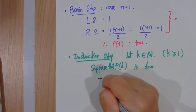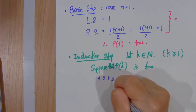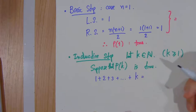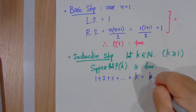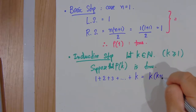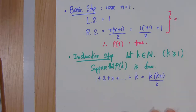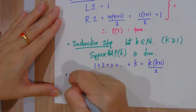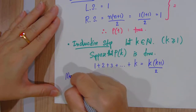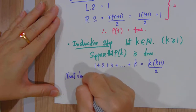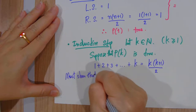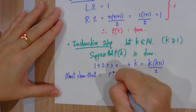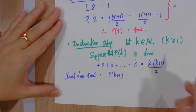From P(k) being true, we have that 1+2+3+...+k equals k(k+1)/2. But we need to show that P(k+1) is true.